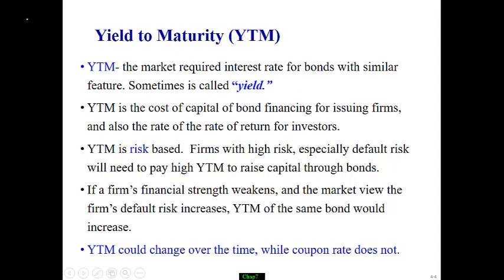Let's talk about yield to maturity, also called yield. From a corporation's point of view, that is the cost of capital of selling a bond. From an investor's point of view, that's the rate of return. Notice YTM is risk-based — if there's high risk, a high chance the company may default on the bond payment, the YTM will be very high. So the YTM can change over time depending on the underlying risk of the company, while the coupon rate does not change.